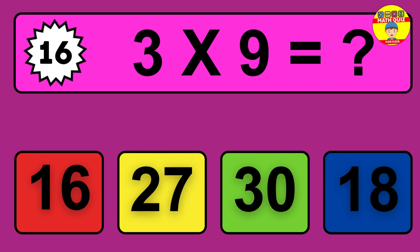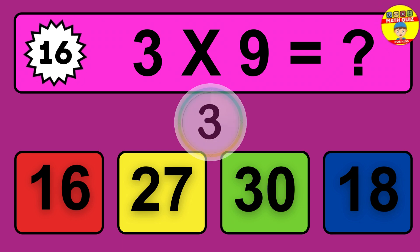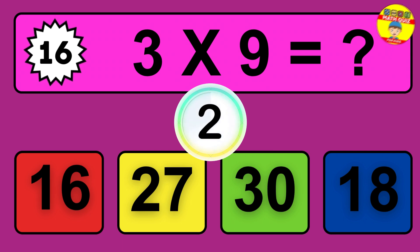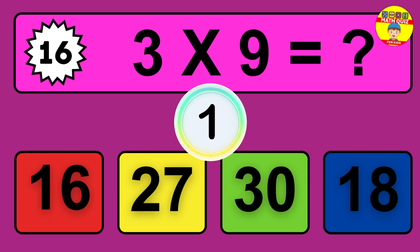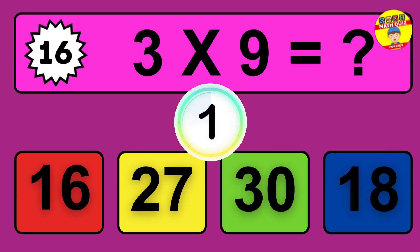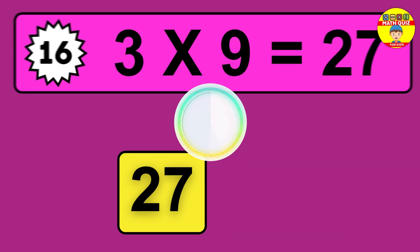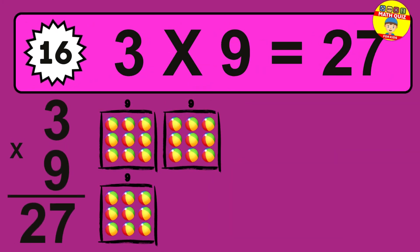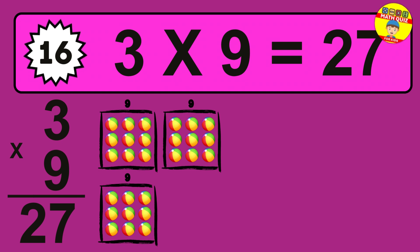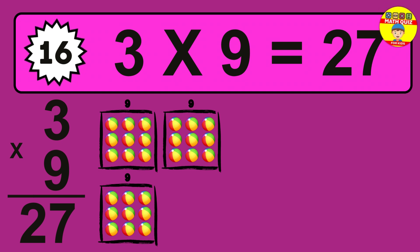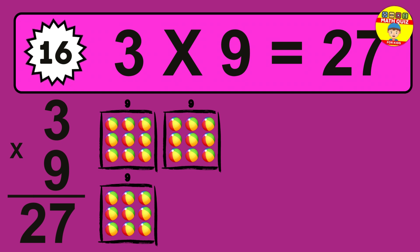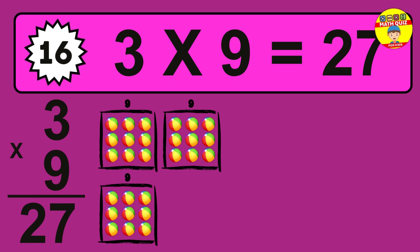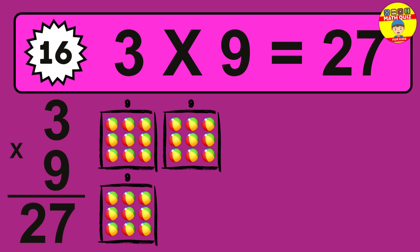Question 16. 3 times 9 equals what? The answer is 3 times 9 is 27. To calculate, we have 3 groups with 9 balls each one. So how many balls do we have? 27 balls.